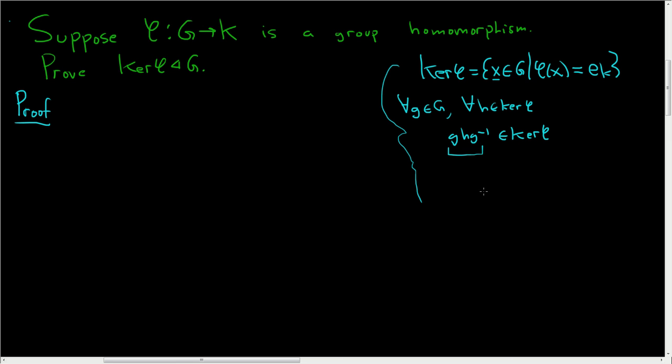So ghg inverse being in the kernel of phi means that phi of ghg inverse is equal to the identity element in K. So it makes sense to start the proof by looking at this. So if we show this, we're basically done.